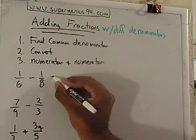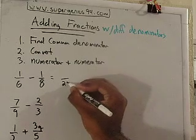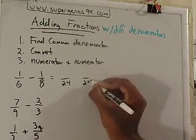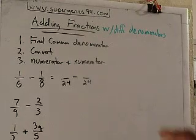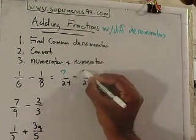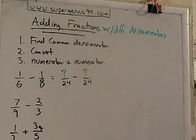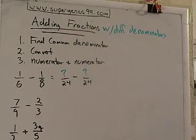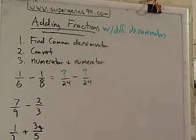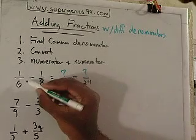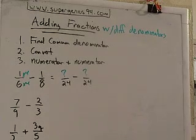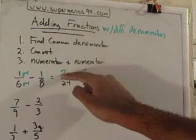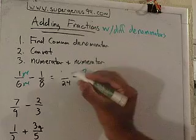But we can ask ourselves what number can both 6 and 8 go into, and that's 24. So we're going to come up with 24 in our denominator, and we're still going to subtract. What times 6 gives you 24? Well, 6 times 4 gives you 24, so then you multiply 1 times 4, so this one right here becomes a 4.